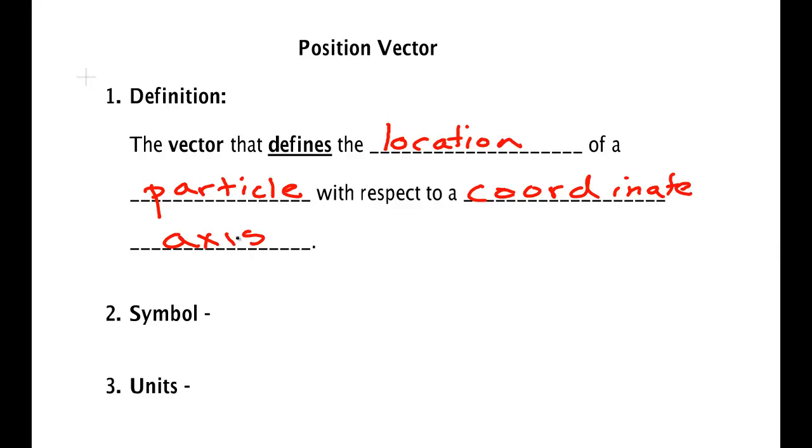I will talk more about this in a minute. A position vector and the position of an object has no meaning unless you tell us where your coordinate axis is. The symbol for the position vector is R with an arrow over it, and its units are meters.